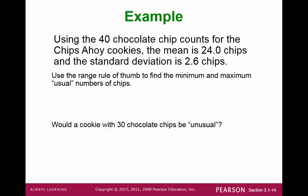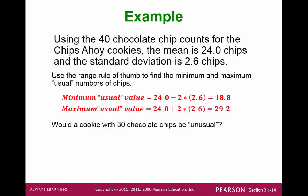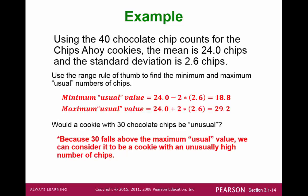For example, suppose we have 40 cookies and counted the chocolate chips in each cookie. We found the mean to be 24 and the standard deviation to be 2.6. Using the formulas, we get the range of usual values to be between 18.8 and 29.2. If we took out a cookie with 30 chocolate chips, would this be unusual? Well, the range is between 18.8 and 29.2, so 30 is slightly above the maximum value of 29.2 — this would seem unusual.